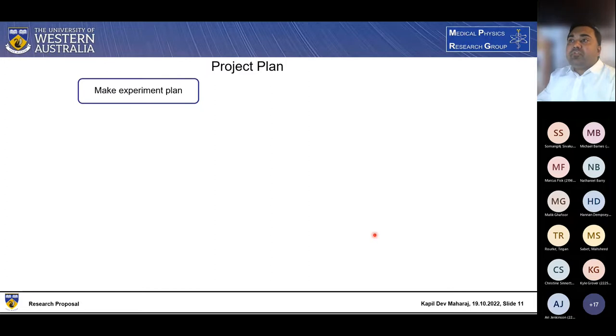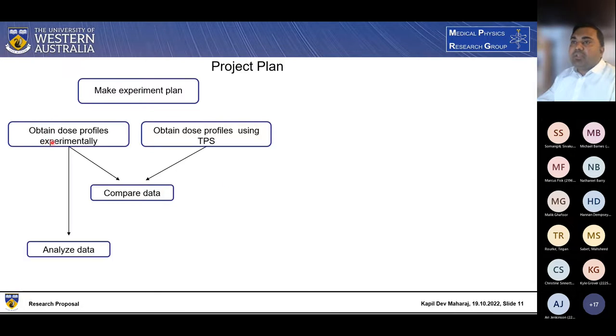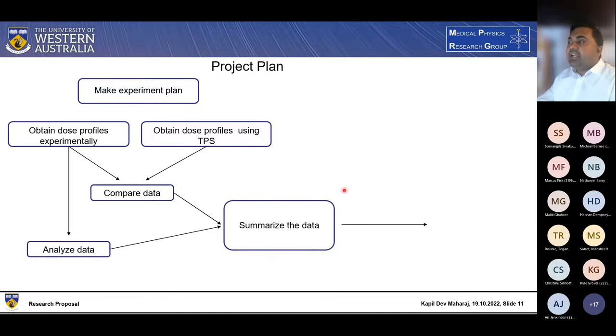In terms of my project plan, I will first make a good experimental plan because since my project contains a lot of measurements, so I believe that if I make a good experimental plan, then it will lead me to measure with more accuracy and more precision. And then I will obtain dose profile experimentally and as well as with the treatment planning system. Then I compare this data and individually, I obtain doses which I will do experimentally, I will analyze them as well, and then I summarize the compared data and analyzed data. And in the end, I will write a report and try to publish it.